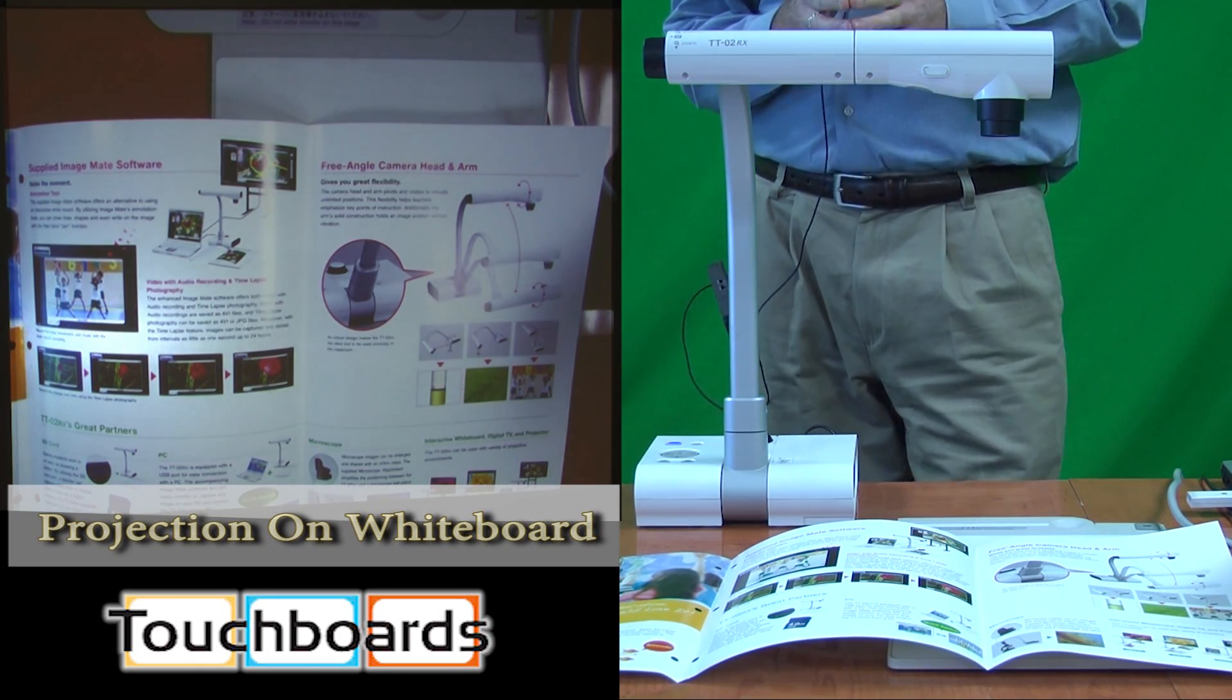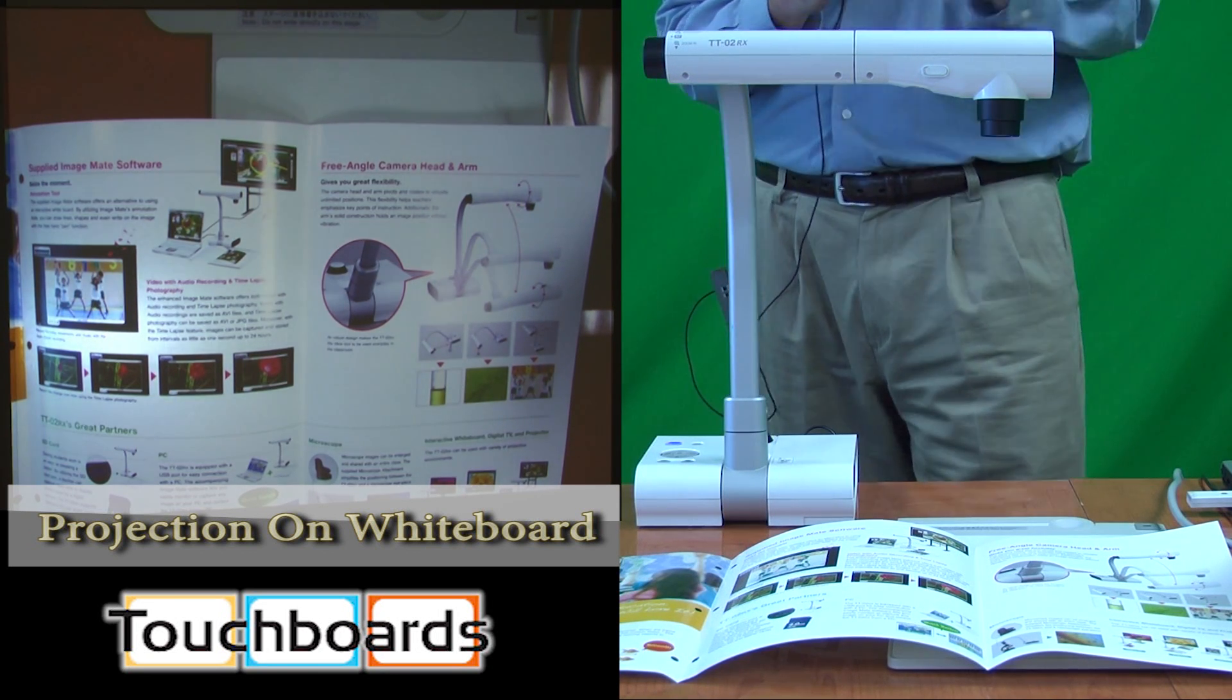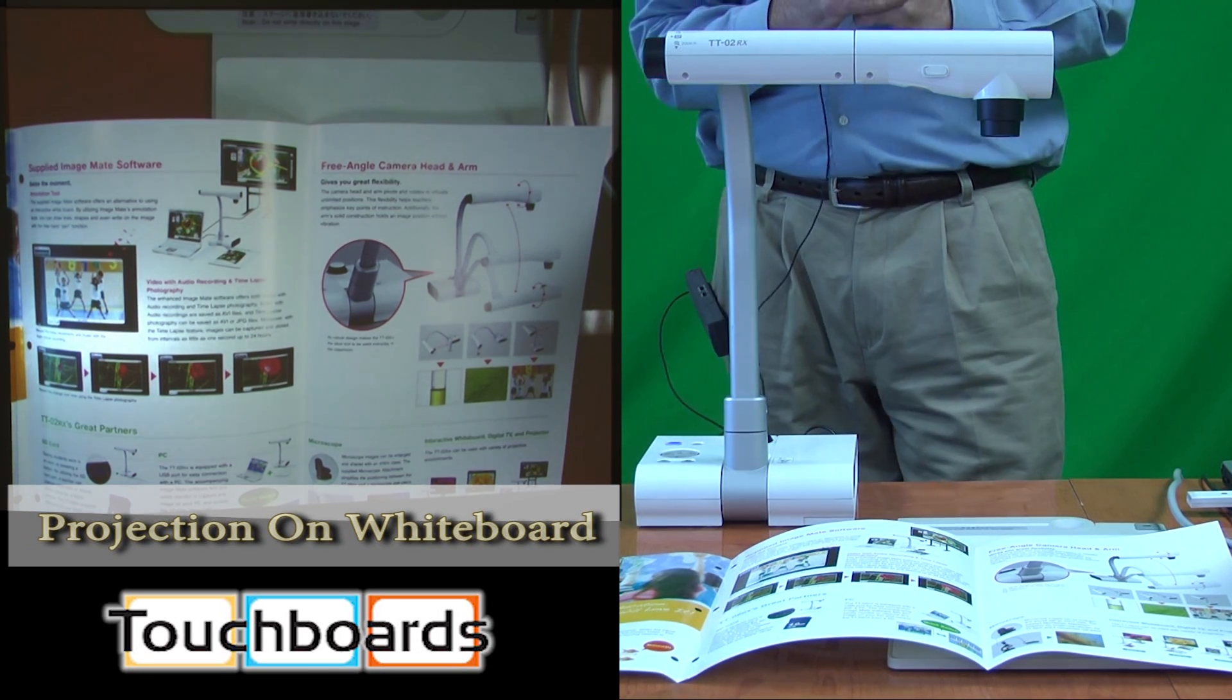It is very important to understand that we do need a display image or a display product, like a projector or an LCD or a plasma, in order to view the output from the document camera.